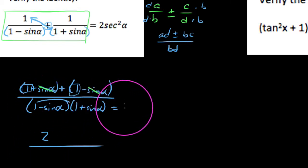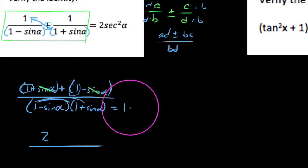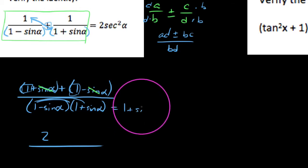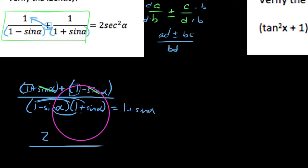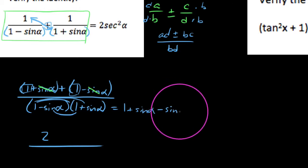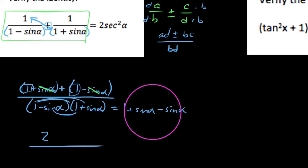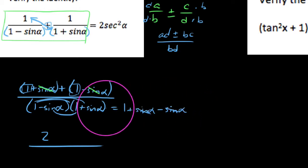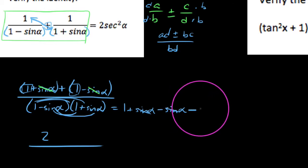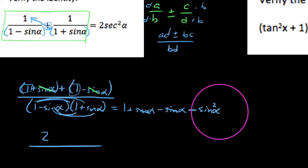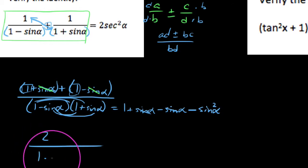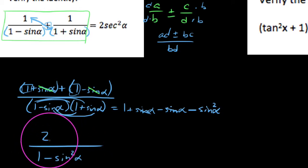As far as the bottom goes, we get 1 times 1 is 1, and if we foil this out we get plus sine of alpha, but then I get minus sine of alpha — hence multiplying conjugate pairs and getting your middle terms to cancel out and getting a difference of two squares. So here's the difference: sine times sine is sine squared of alpha. From the bottom, I get 1 minus sine squared of alpha.